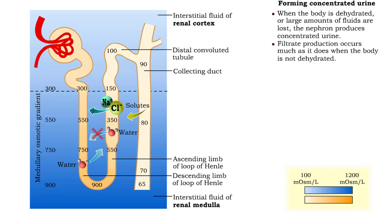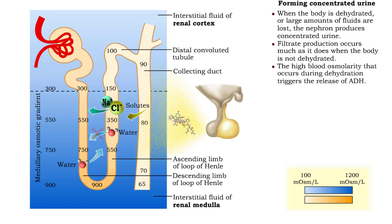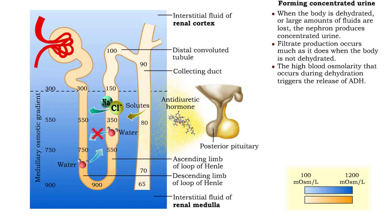In this situation, filtrate production occurs much as it does when the body is not dehydrated. However, the high blood osmolarity that occurs during dehydration triggers the release of antidiuretic hormone.